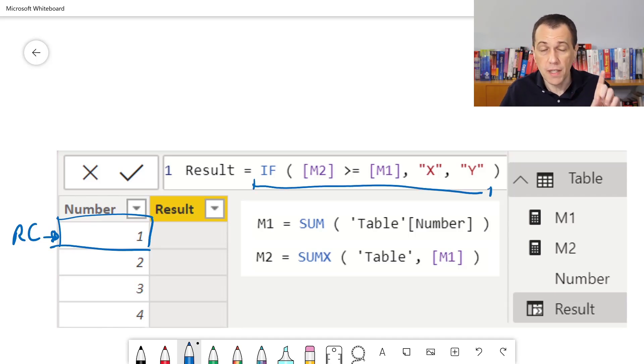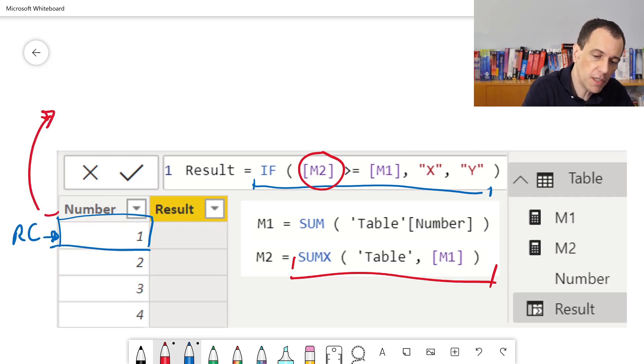We have two major references, M2 and M1. Let's start from M2. M2 is a major reference that references this expression. But before executing the expression, we have a context transition. The result of the context transition is a filter context that has only a table with one column number with the value 1.